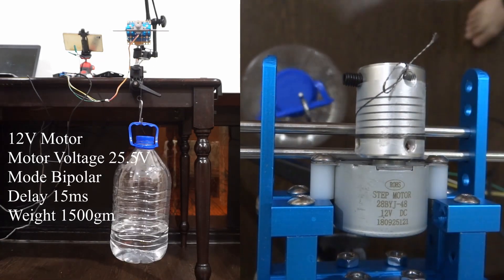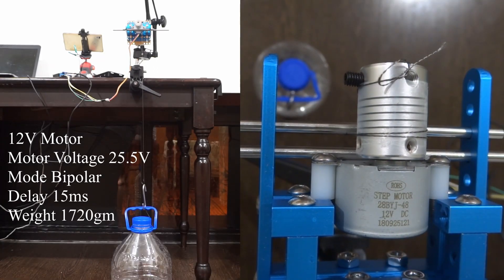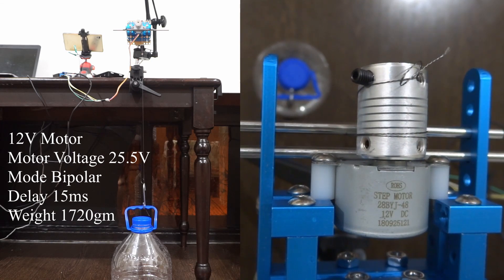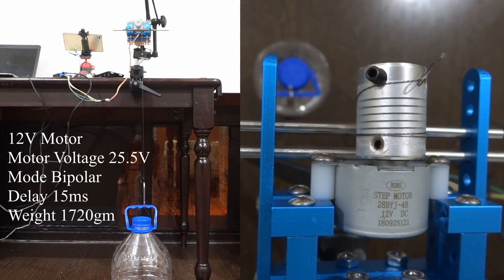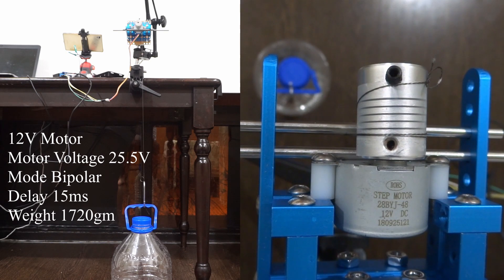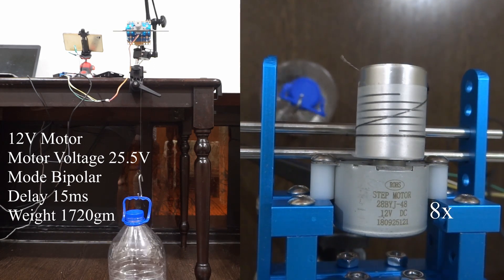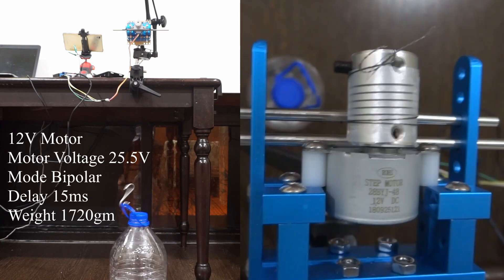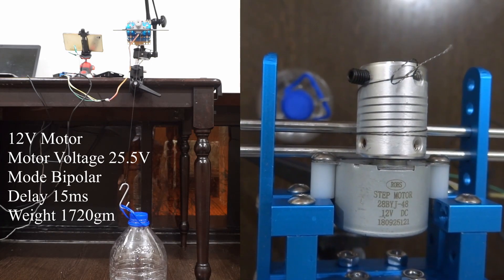It is able to lift that. The weight of the bottle now is 1.72kg, similar to the maximum weight lifted by 5V motor when it was used in bipolar mode at 10V. It is not able to lift that till the top.